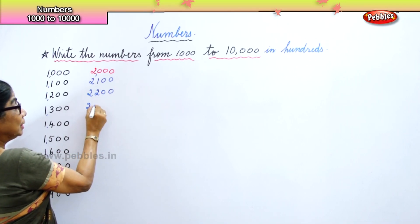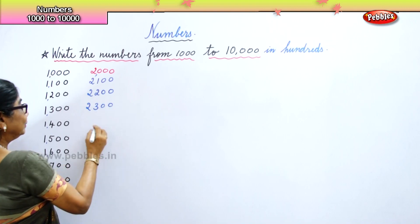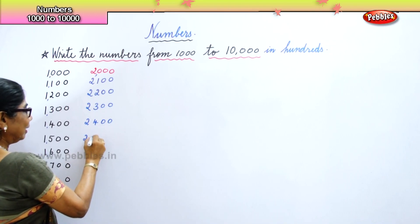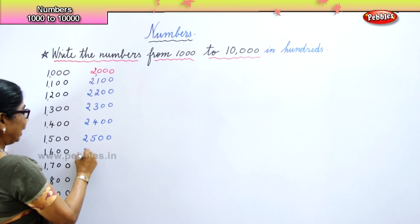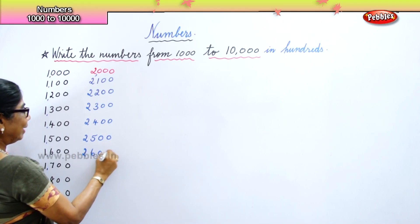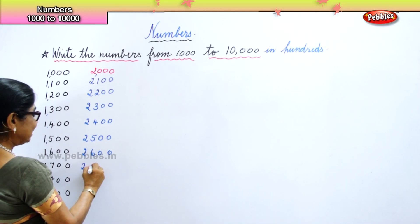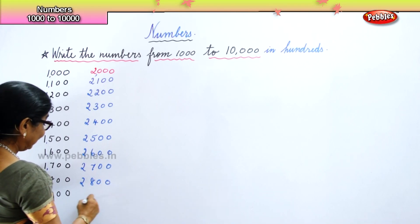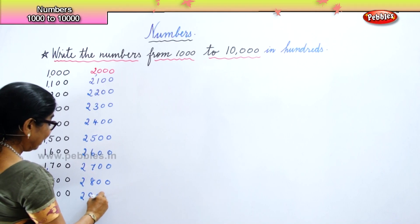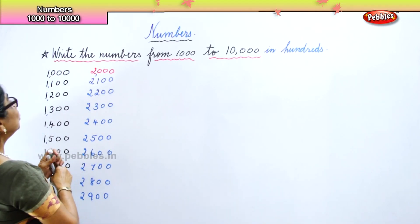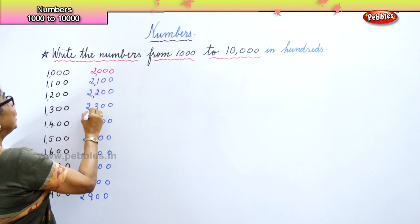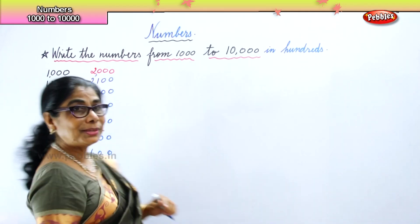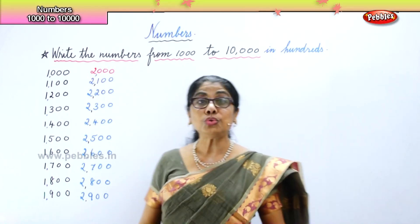2,000 three hundred. Next: 2,000 four hundred. 2,000 five hundred. 2,000 six hundred. 2,000 seven hundred. 2,000 eight hundred. Next: 2,000 nine hundred. Don't forget to put a tiny little comma to separate out thousands and hundreds. Now we have come right up to 2,900.